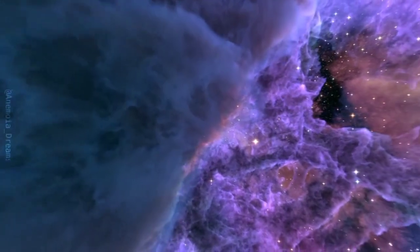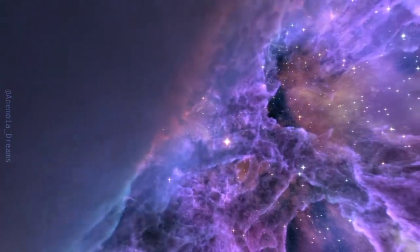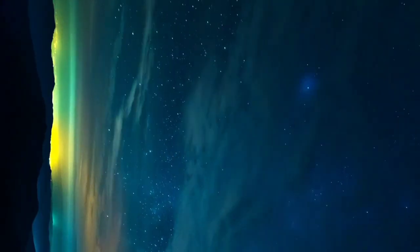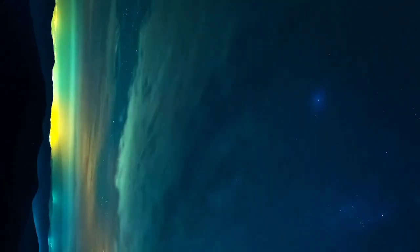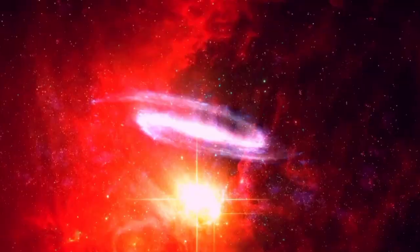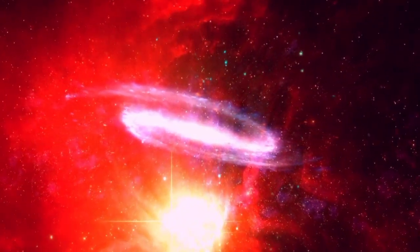As a red supergiant, Betelgeuse is considered one of the largest and most massive types of stars. It has been on the galactic radar for many years, but its recent erratic fluctuations in brightness have sparked speculation that it is preparing for a supernova.